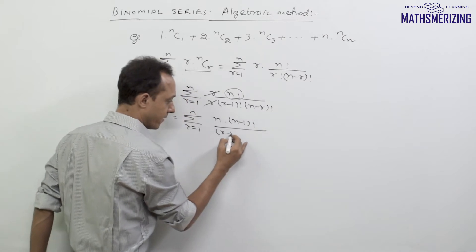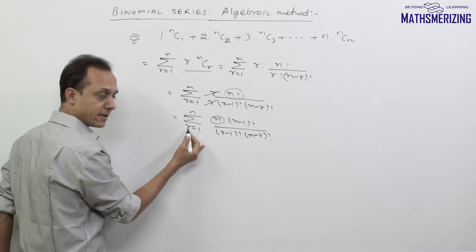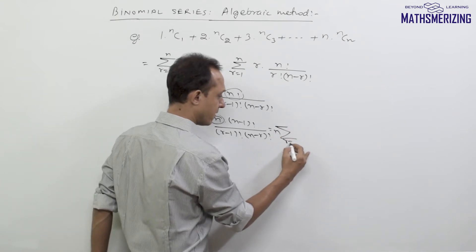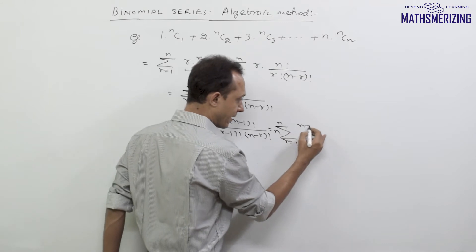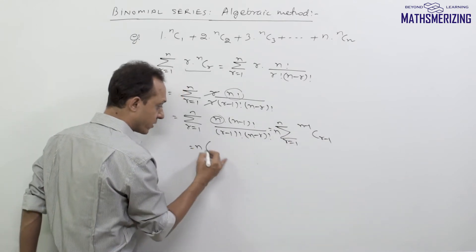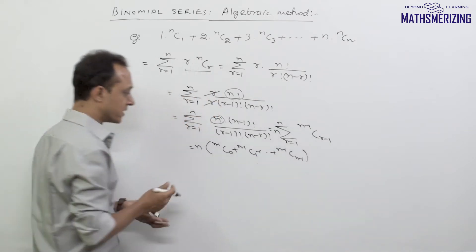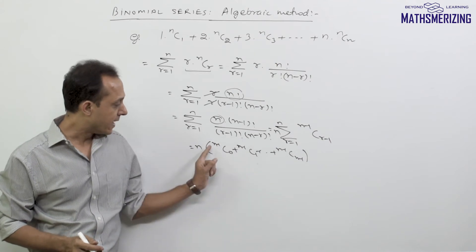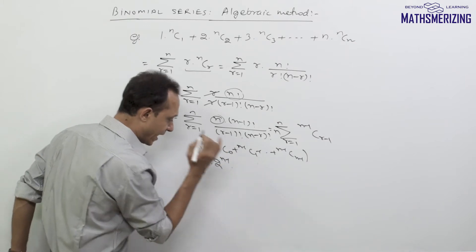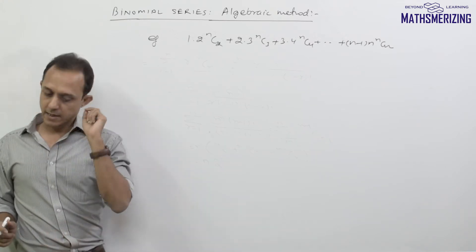I take n out because the summation is in terms of r, not n. Then I can write the summation as (n-1)C(r-1). Expanding the series gives (n-1)C0 + (n-1)C1 + ... + (n-1)C(n-1), which is the sum of all binomial coefficients of a series with index n-1. That sum equals 2^(n-1). So the answer to this question is n · 2^(n-1).